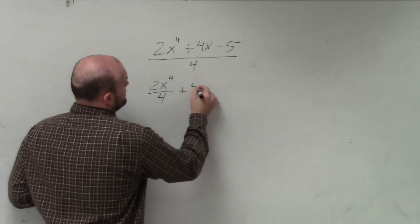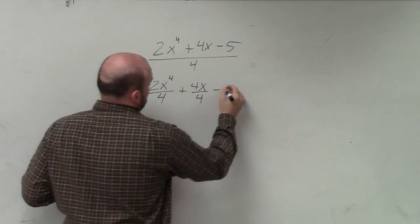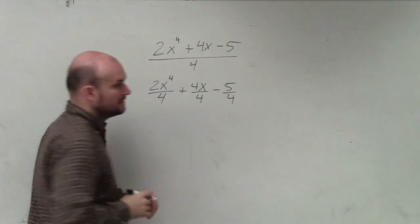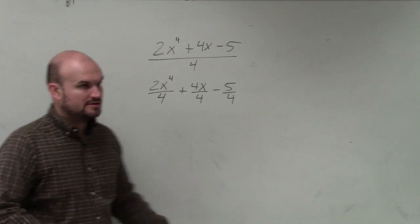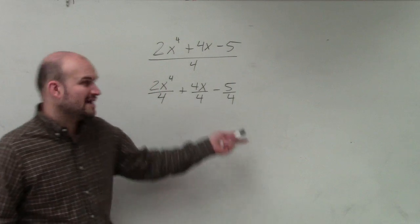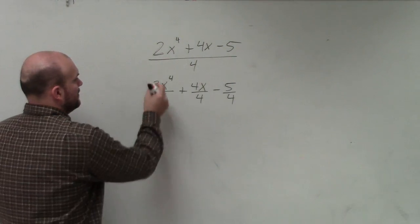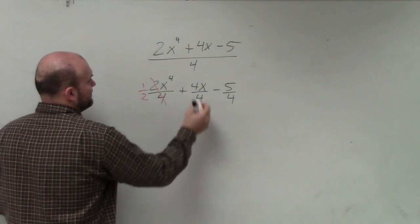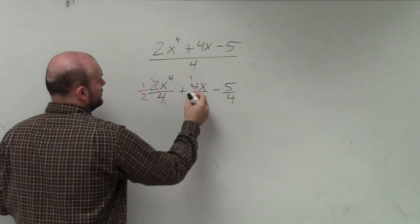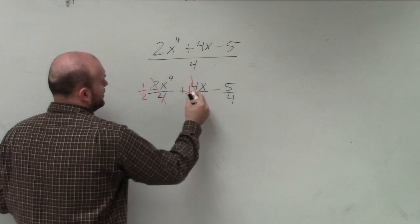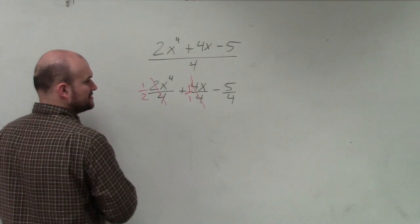So when I simplify this, I have this plus... does everybody see what I did? I just divided the 4 into all those terms, and that reduces to 1 half. That reduces to 1 over 1, and that cannot be reduced.